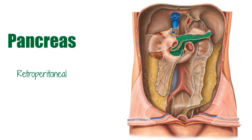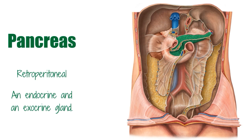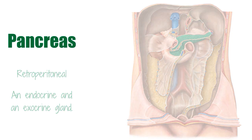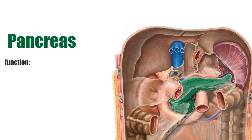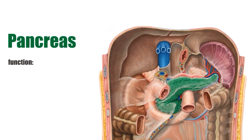The pancreas is both an endocrine and an exocrine gland that can be divided anatomically into a head, a neck, a body, and a tail, which we will also talk about later in this tutorial. But before we do so, let's first take a look at the functions associated with the pancreas.